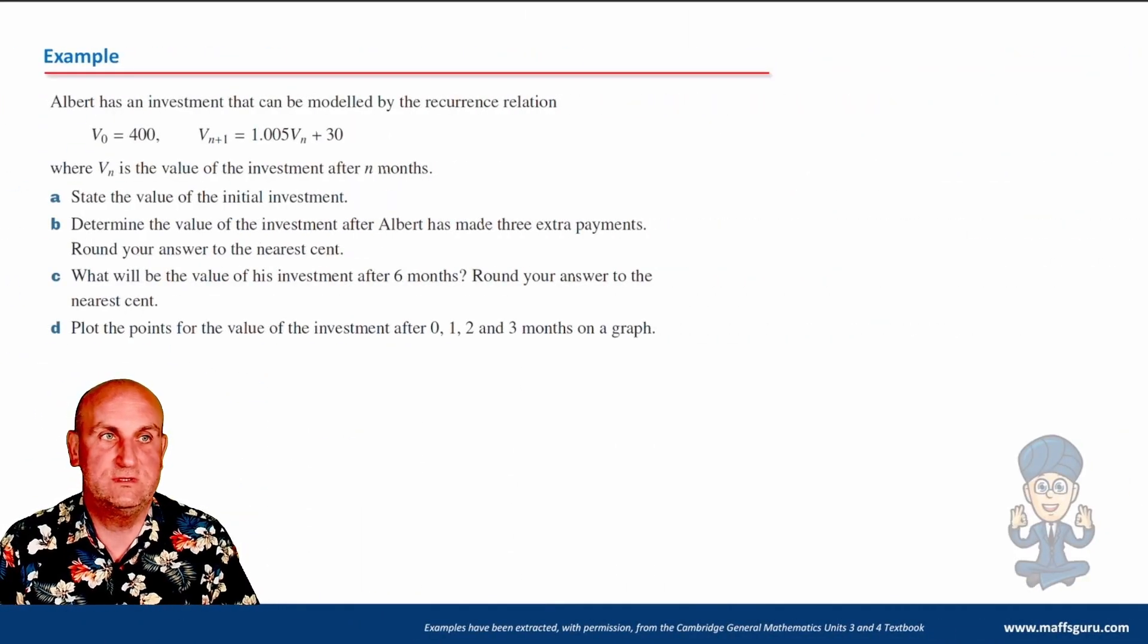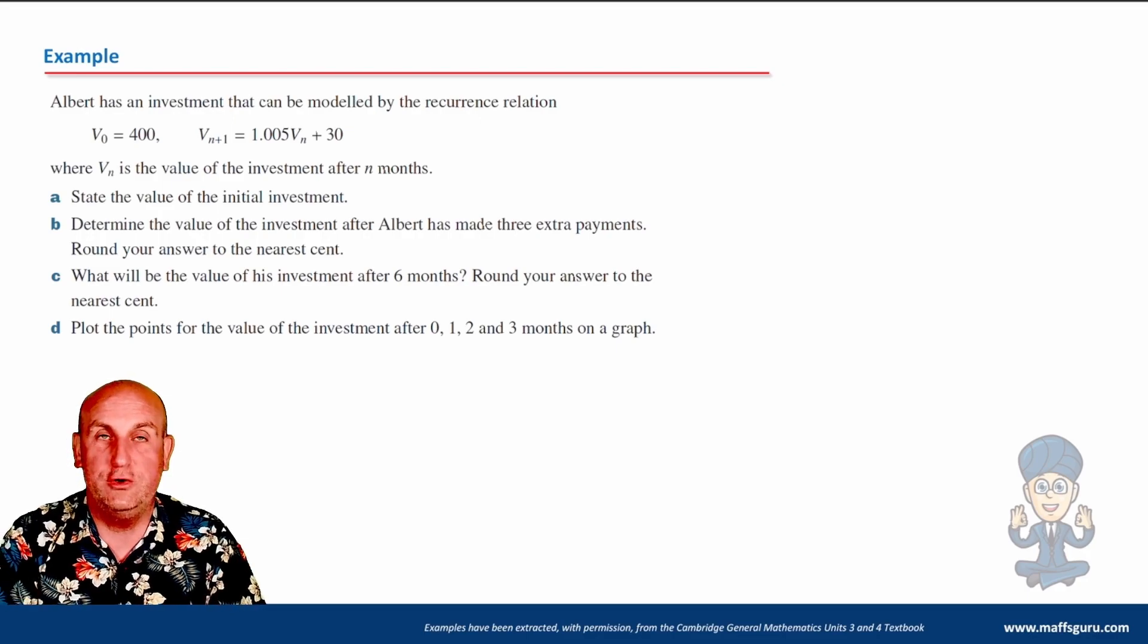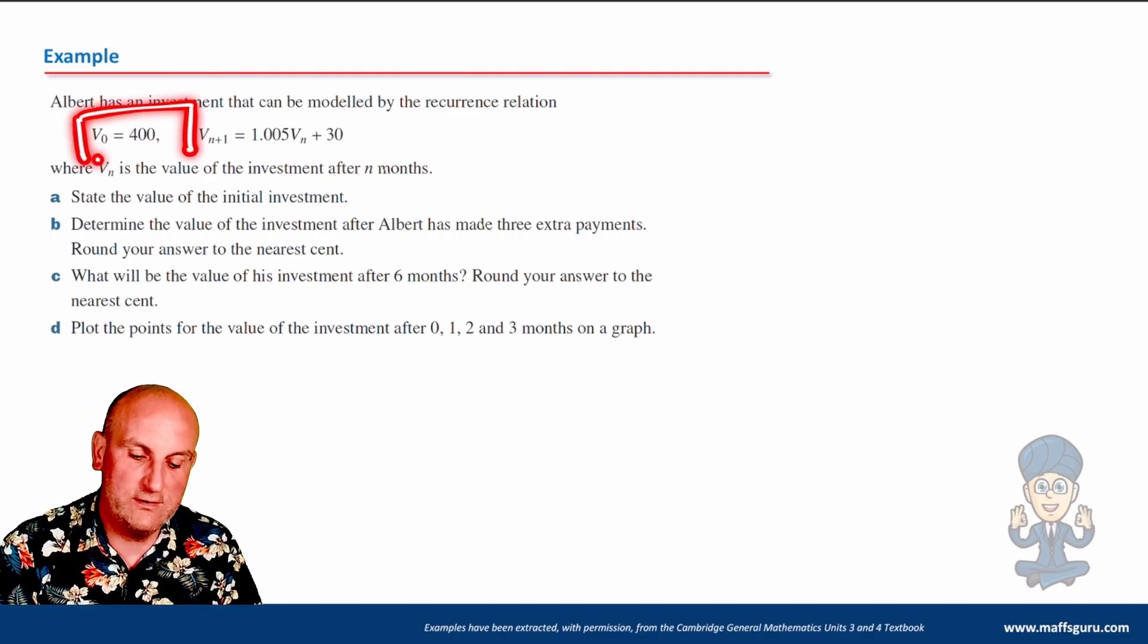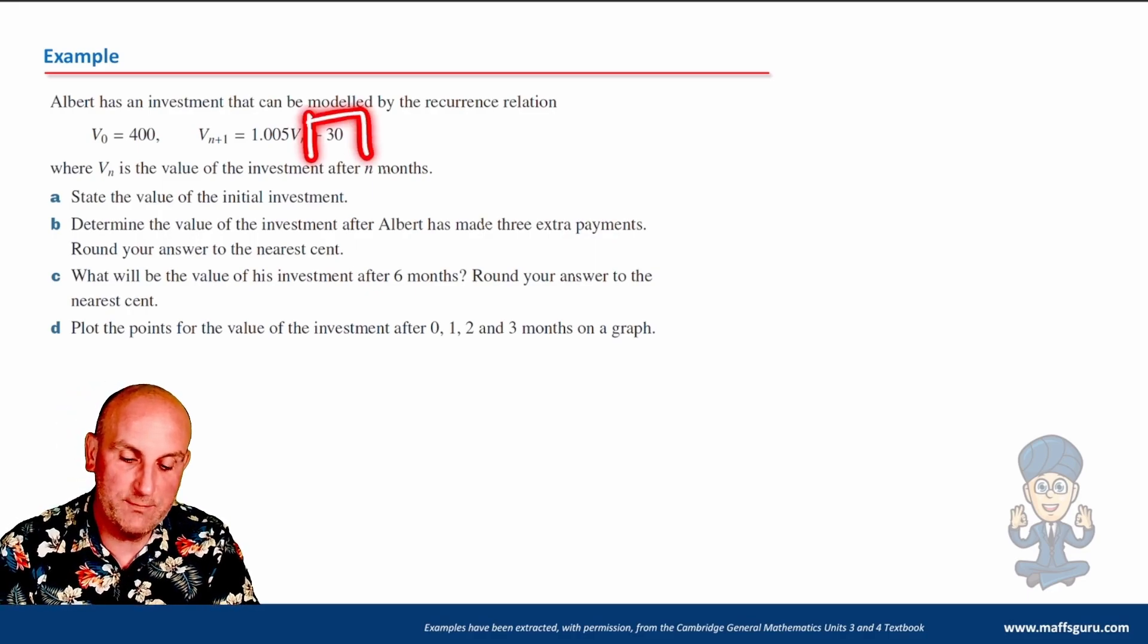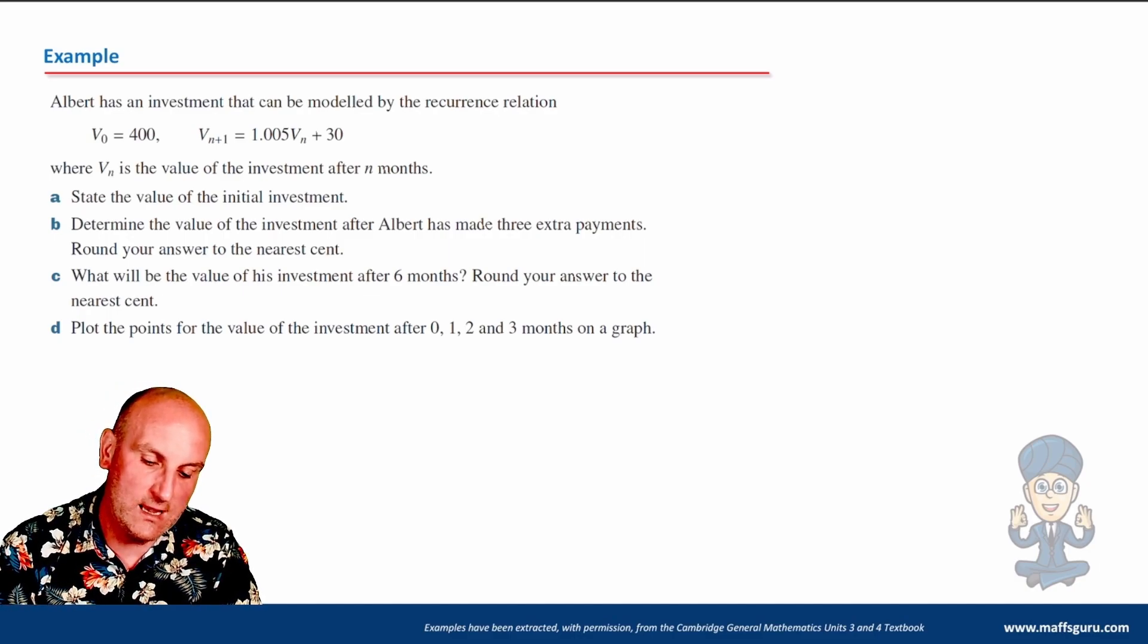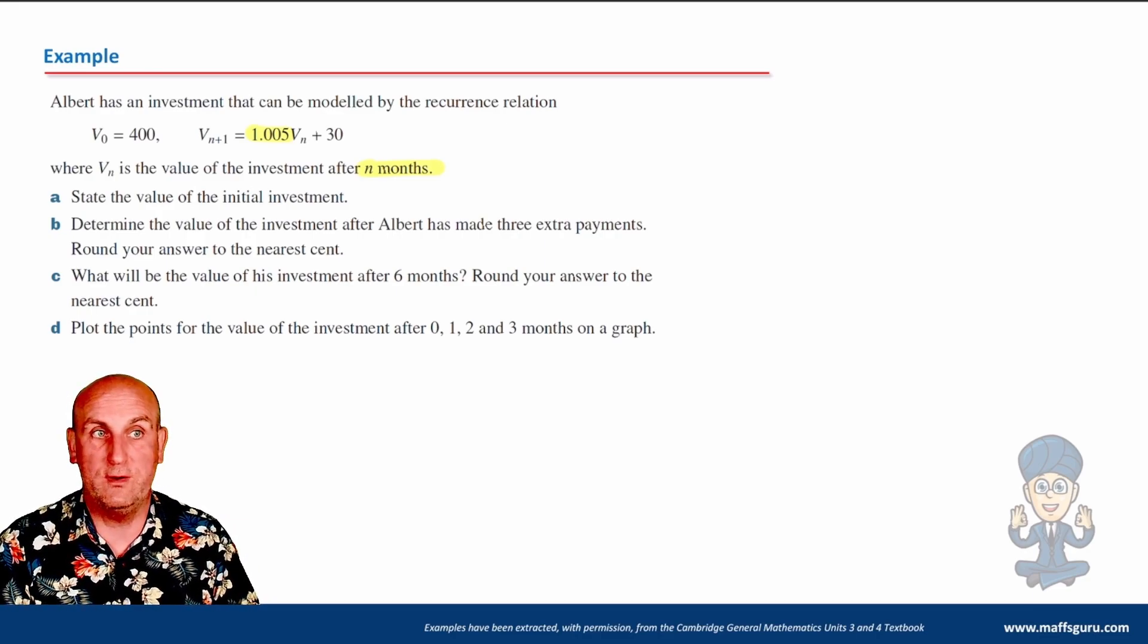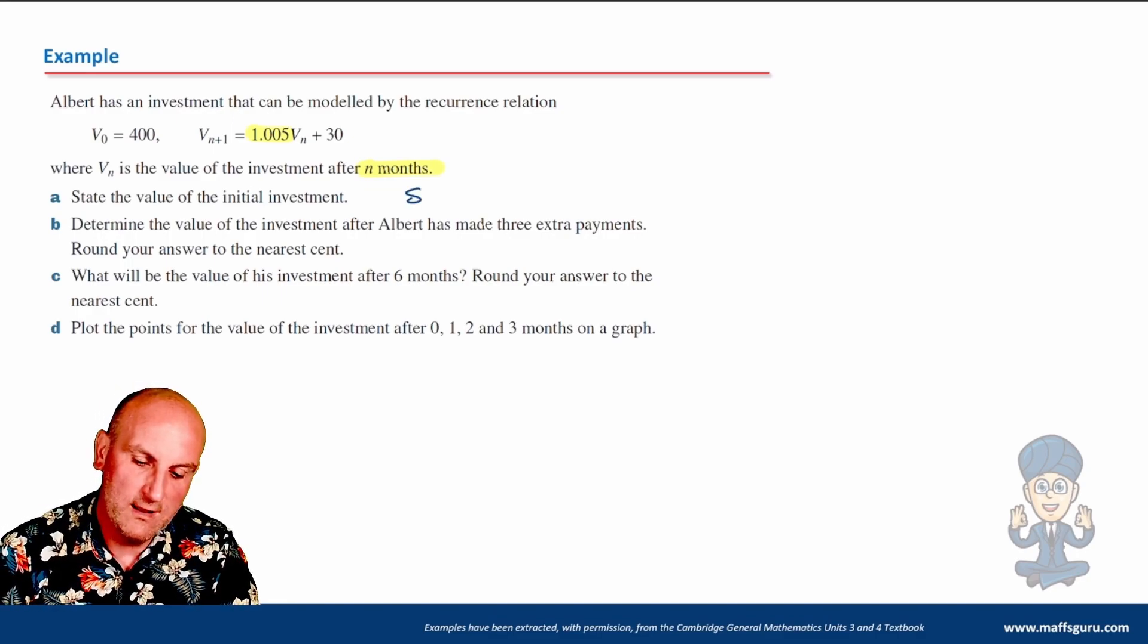Albert has an investment that can be modeled by the recurrence relation. You've noticed in the previous two questions we've made you write a recurrence relation. Now we are asking you to interpret one, to actually look at it and go what do you understand, what it means. So when you look at that V_0 = 400, what does it mean? When you look at this 1.005, what does that stand for? When I have this plus 30, what does that mean? Where V_n is the value of the investment after n months. Now why is that important? Why is that month's word really really important? Because it's going to give context to that value of r in a moment, or my capital R. So (a) we should be able to do pretty simply: state the value of the investment or the initial investment. Come on, let's make it difficult. $400, don't forget the dollars.